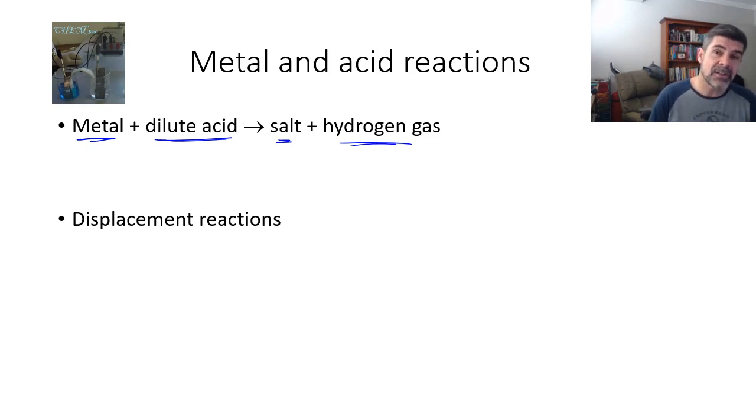As far as acids are concerned, we do have two different types of acids: concentrated acid and dilute acid. Concentrated acids are something we will look at a little bit later in the course. But for this particular focus, we're just going to look at some of the reactions of the more active metals with dilute acids.